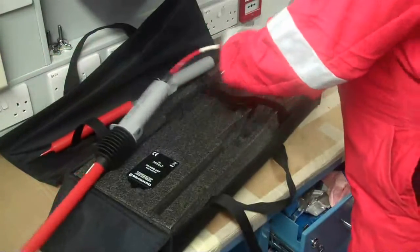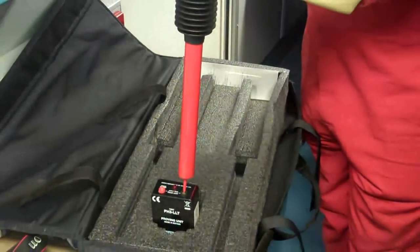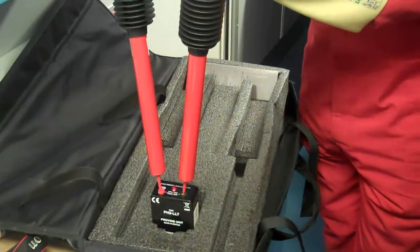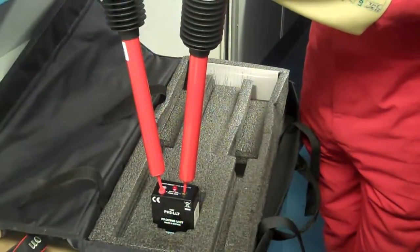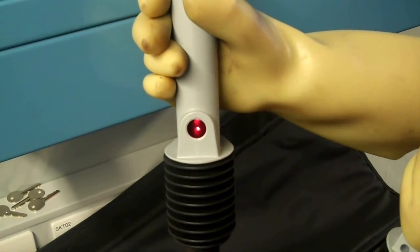The probes are now proved using a dedicated proving unit. The proving unit contains its own self-test function in the form of a light which glows when it is operated correctly. The light on the probe should also glow during this test to confirm satisfactory operation.